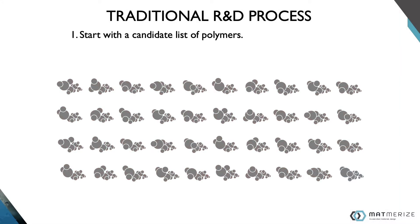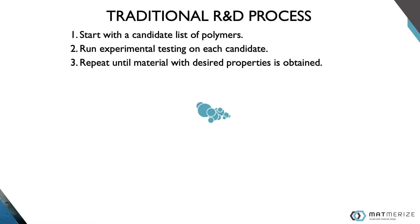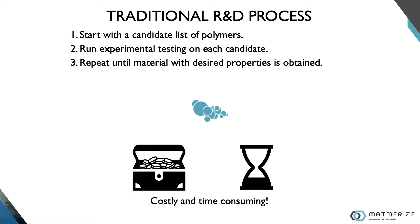You start with a large list of candidate polymers, and you run experimental testing on each candidate individually. You repeat this until you find a material with the desired properties. This traditional process involves significant material and operational costs and can take years to complete.